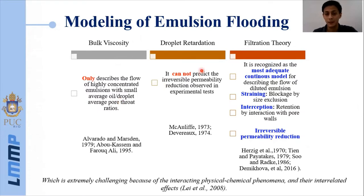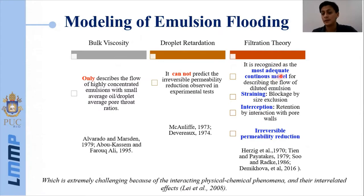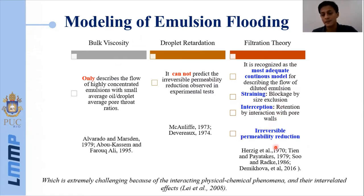The second one is the droplet retardation model. It is a good model, but it cannot predict the irreversible permeability reduction. And finally, the filtration theory is the most adequate continuous model. It is capable to correctly reproduce the straining and interception phenomena. However, it does not reproduce the irreversible permeability reduction.